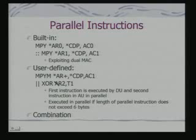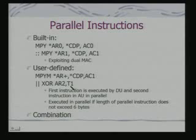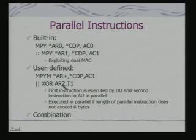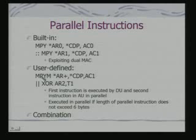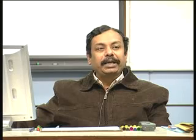Users can also define parallel instructions. For example, a user can indicate an XOR operation as a 16-bit instruction. The first instruction executes in the data unit and the second in the address unit with its 16-bit ALU. Users thus have flexibility to specify multiple instructions for parallel execution. For parallel execution, certain conditions must be satisfied: the combined parallel instruction must not exceed 6 bytes — from the instruction buffer which decodes 6 bytes — so both instructions must be decodable simultaneously. There must also be no hardware resource conflict.